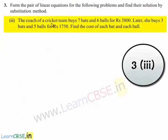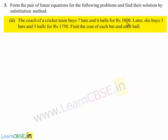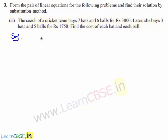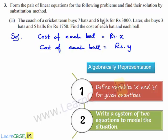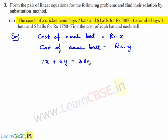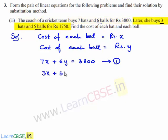Coming to the third part: the coach of a cricket team buys 7 bats and 6 balls for 3800 rupees. Later she buys 3 bats and 5 balls for 1750 rupees. Find the cost of each bat and each ball. Let the cost of each bat be rupees x and the cost of each ball be rupees y. So we can write 7x plus 6y is equal to 3800 as equation number one, and 3x plus 5y is equal to 1750 as equation number two.